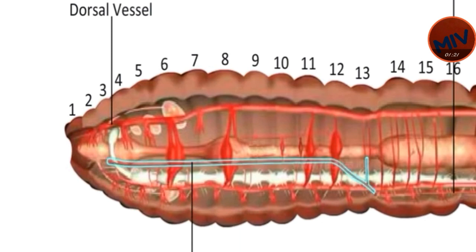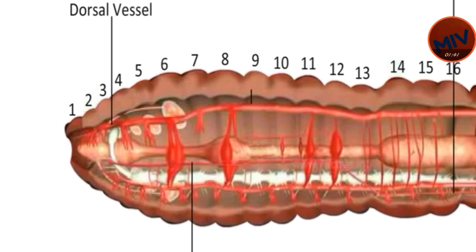Lateroesophageal vessels — these are two vessels formed by the division of the subneural vessel in the 14th segment and extend up to the second segment. These vessels collect blood from the buccal cavity, pharynx, esophagus, and the body wall.